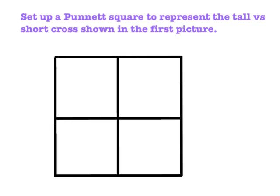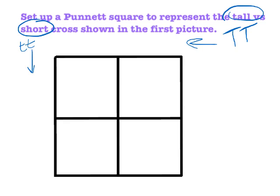It's named after a guy whose last name was Punnett — that's why Punnett is always capitalized. We're going to take a look at the basic rules of setting up a Punnett square. Here we have a cross representing tall versus short: a pure breeding tall plant, which is homozygous tall — big T, big T — and a pure breeding short plant — little t, little t. One parent goes along the top, one parent goes along the side. It doesn't matter which is which as long as you're consistent. The second rule is we have to apply the rule of segregation.